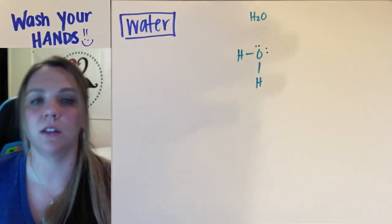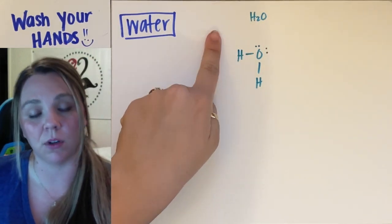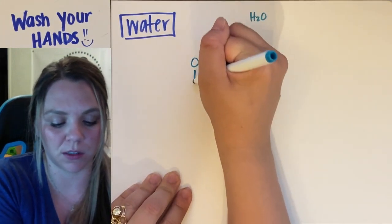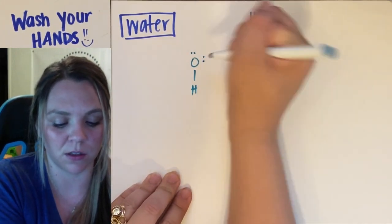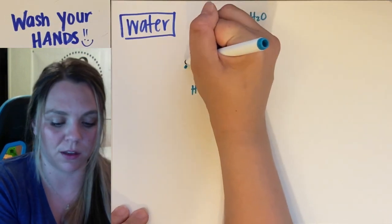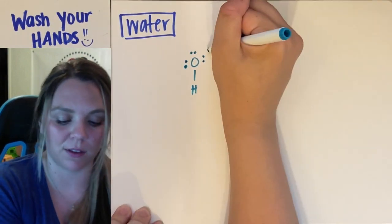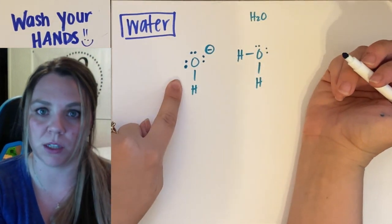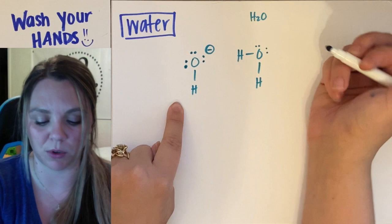It can donate a hydrogen, it could get rid of one of its hydrogens, and go this direction to be just OH. The oxygen would have a full valence shell and have a minus charge. This would be OH minus if it donated a proton.